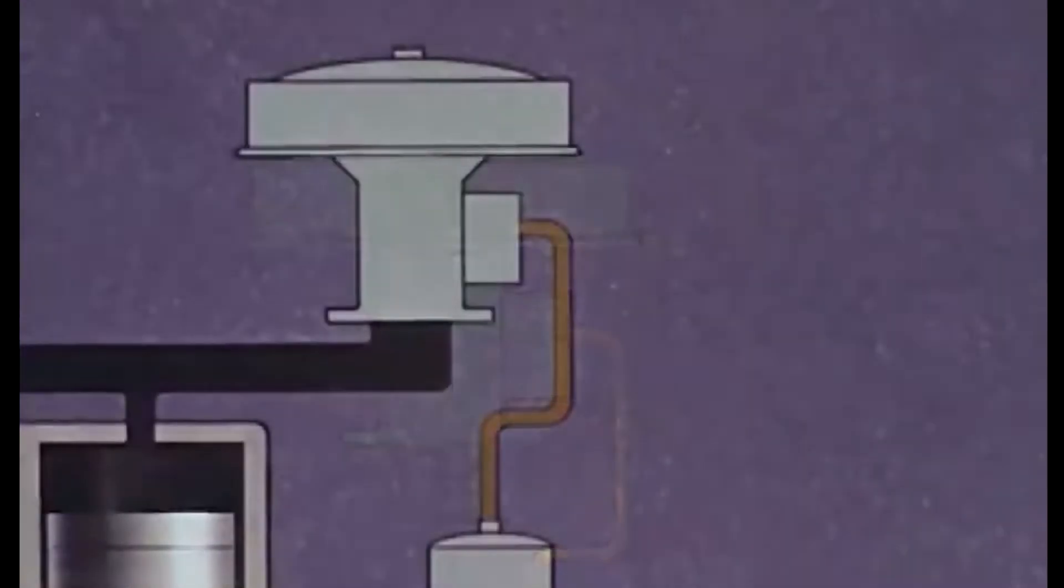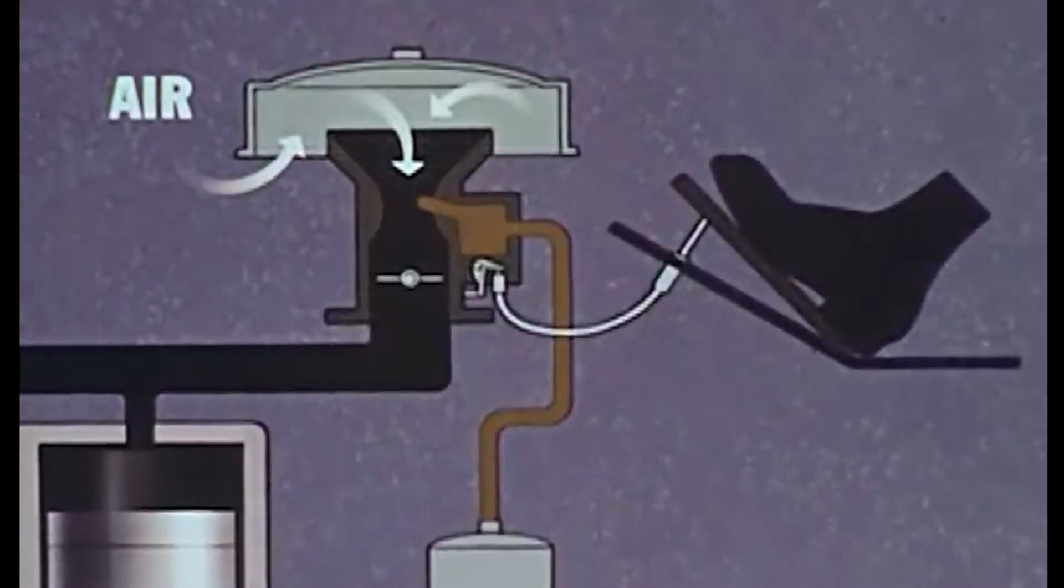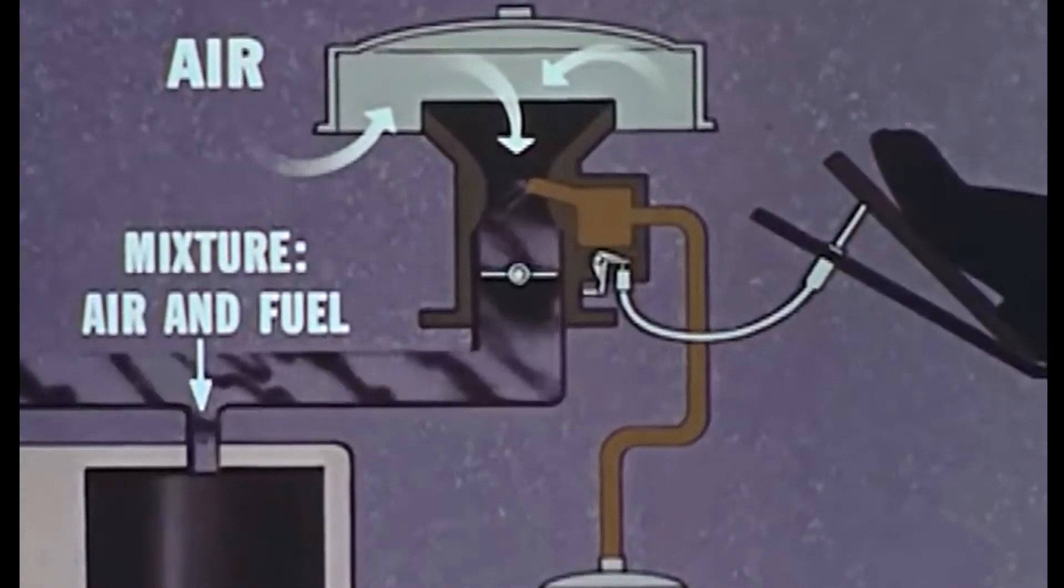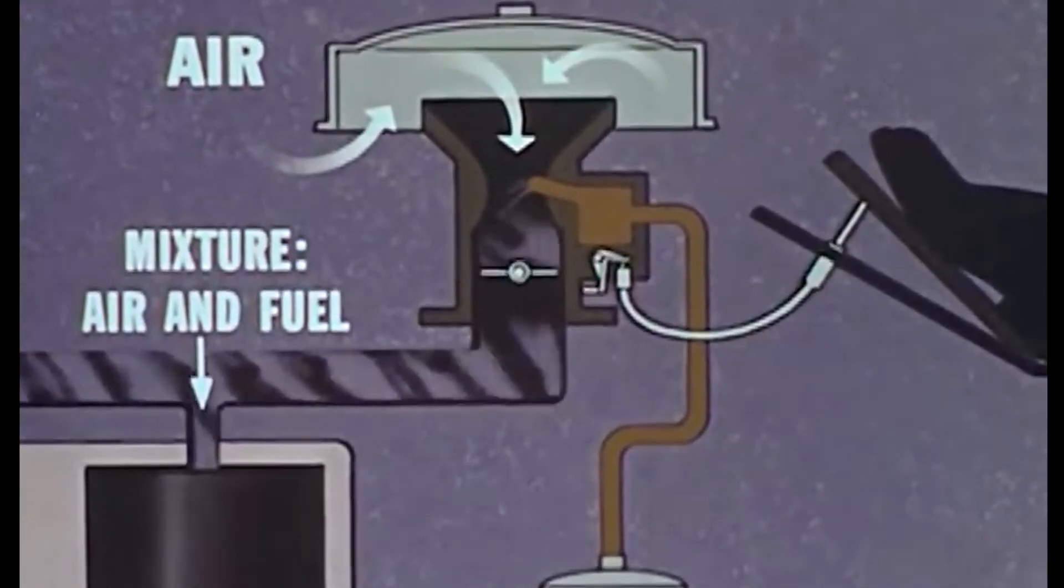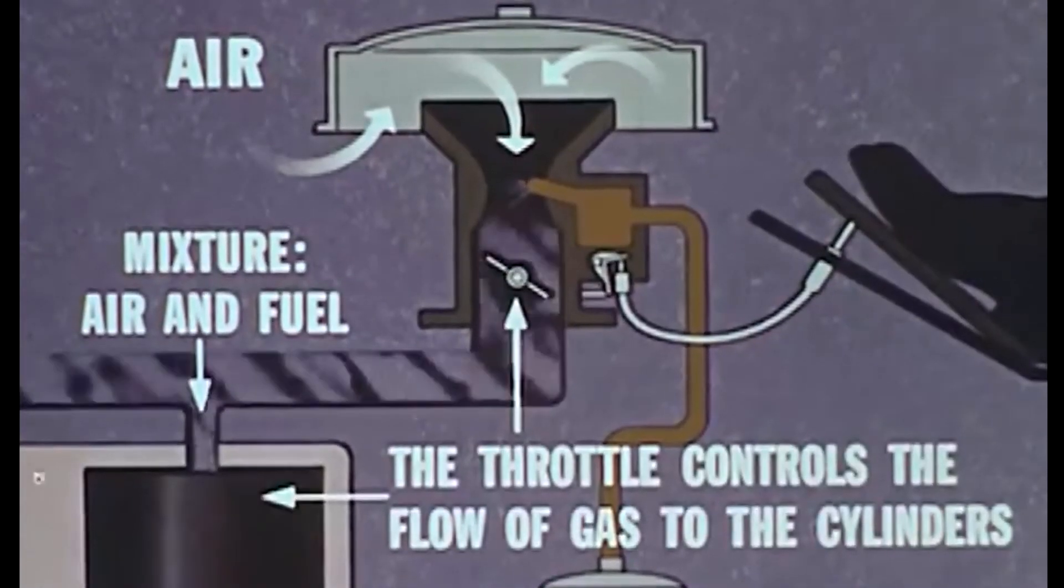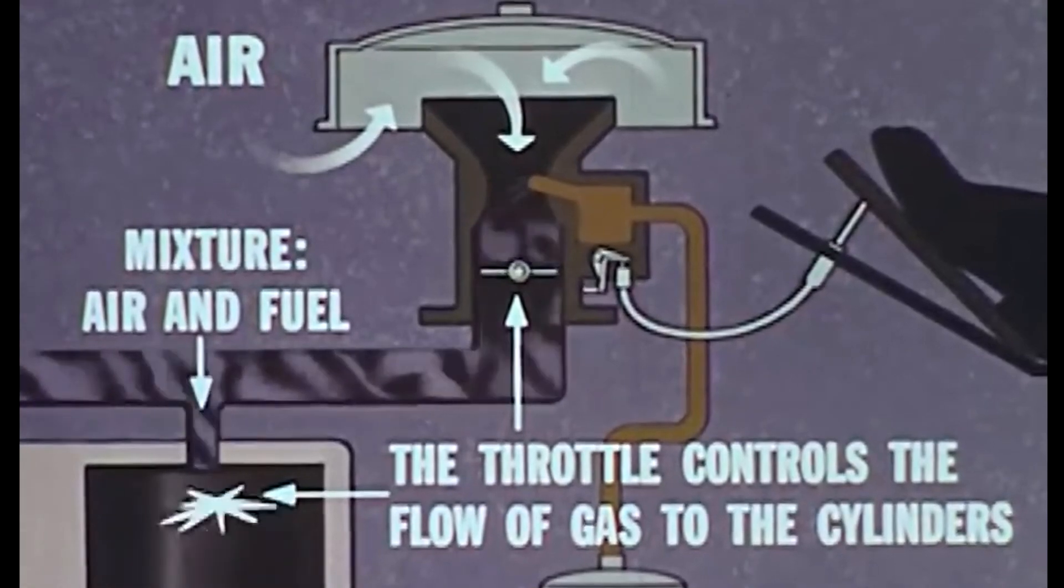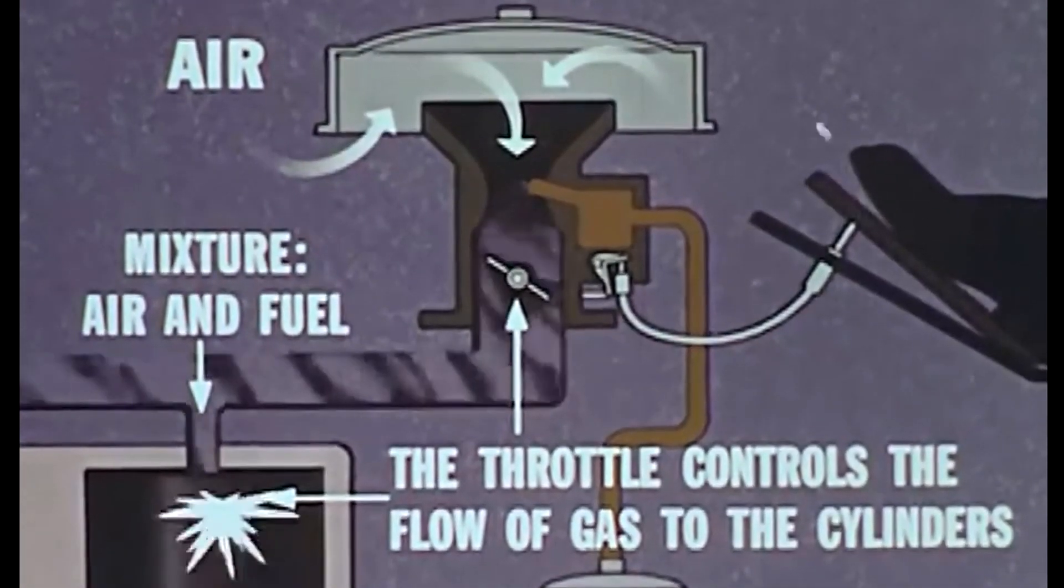A linkage connects the accelerator pedal with a valve in the carburetor. Stepping on the gas opens this valve, increasing the gas flow and speeding up the engine. Easing off on the pedal reduces the flow and the engine slows down.